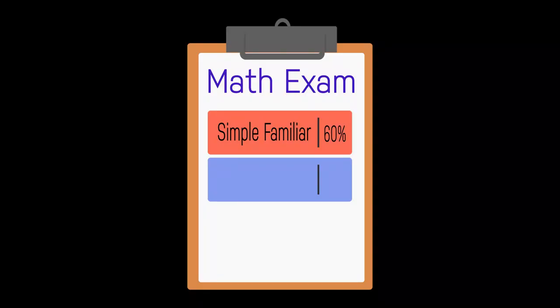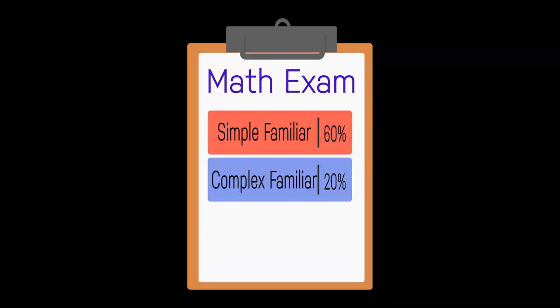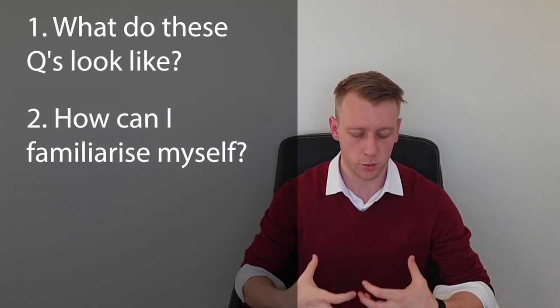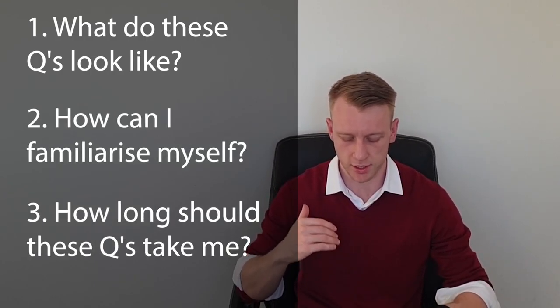The next part of the exam is 20% complex familiar, where these are the sorts of questions that are challenging and you've probably looked at them in class at some point. There is 20% of complex unfamiliar style questions - they're complicated, they're complex and they are unfamiliar. What do these three sorts of questions and the complexities look like? How can I familiarize myself with them a little bit? And how long should I be spending on each of these questions?